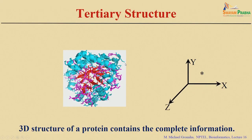When you talk about the 3D structure of a protein, it gives the atomic coordinates — for each atom it gives information regarding X, Y, and Z coordinates. How do we obtain the information regarding the 3D structures?